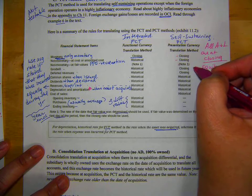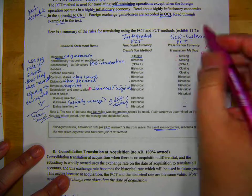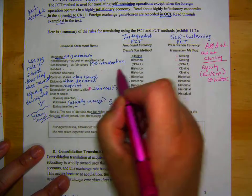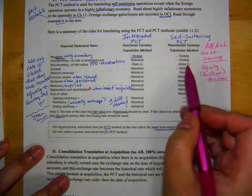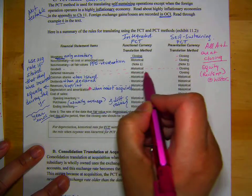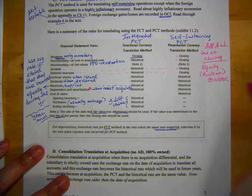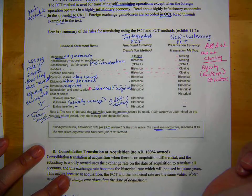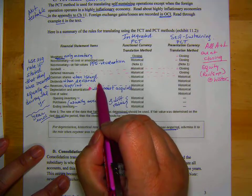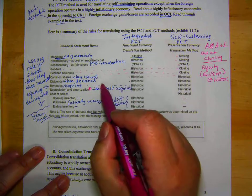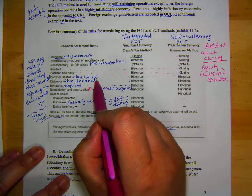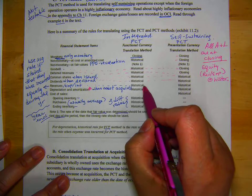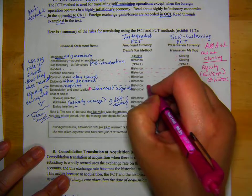Now, deferred revenues, it's an asset or liability, it's closing. Common shares. I'm sorry. I just went along here. I should have drawn lines. Goodwill's at closing. Deferred revenues at closing. Common shares are when issued. So that's historical. Dividends when declared. Historical. Revenues, expenses and interest, also historical. Use average if stated.